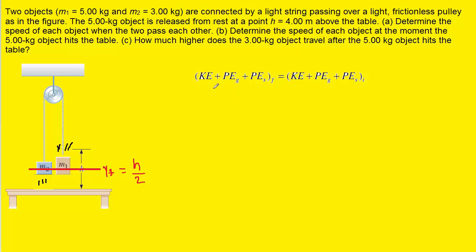On the left-hand side, we have a subscript f to indicate the final energies, and we've placed the kinetic energy, the gravitational potential energy, and the spring potential energy on that side of the equation. On the right-hand side, we have the corresponding values for the initial state. There is no spring present in this question, so we can eliminate the spring potential energy. Also, initially the blocks are at rest, so the initial kinetic energy is zero.